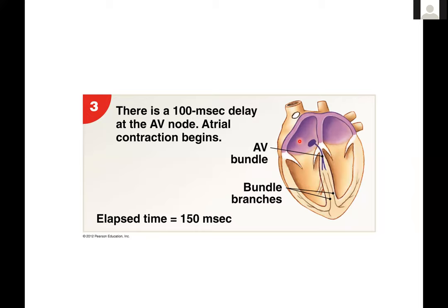Due to the difference in depolarization rates between the AV and SA nodes, you get about a 100-millisecond delay at the AV node. The signal reaches there and then sits for 100 milliseconds before it's allowed to proceed through the bundle of His. This is significant because in order for blood to move effectively through the heart, the atria need to contract first followed by the ventricles. Without this 100-millisecond delay, you wouldn't have enough time for the atria to contract and squeeze the last bit of blood into the ventricles. This delay gives the atria time to finish emptying before ventricular contraction begins.